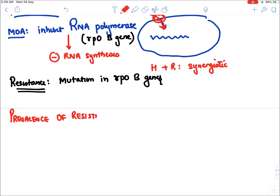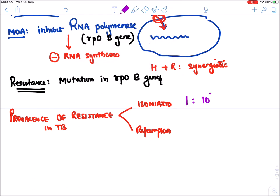Prevalence of resistance in TB: resistance to isoniazid occurs in 1 in every 10^7 to 10^8 bacteria, while resistance to rifampicin occurs in 1 in every 10^6 bacteria.